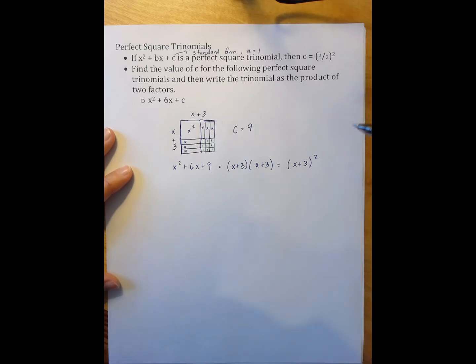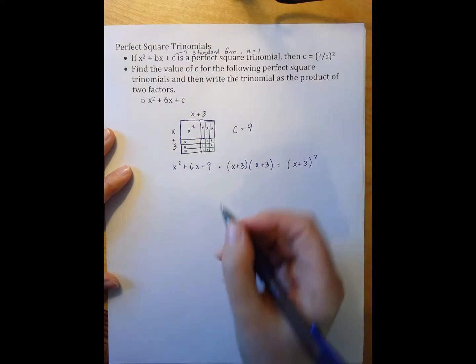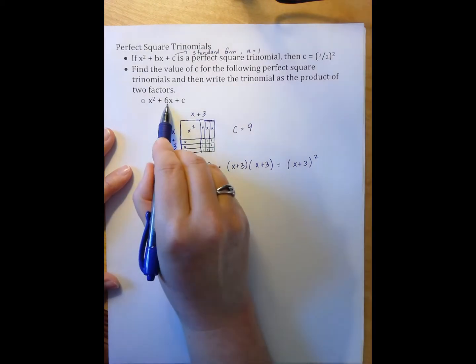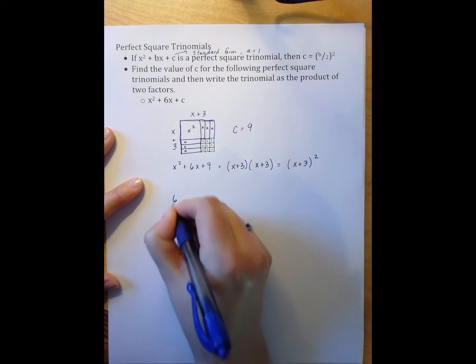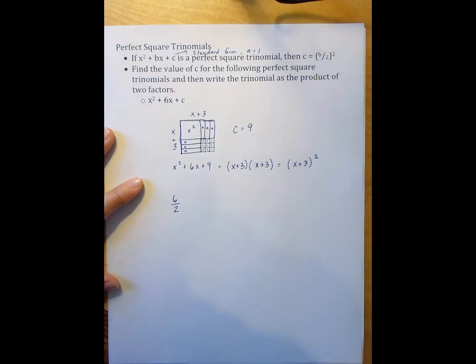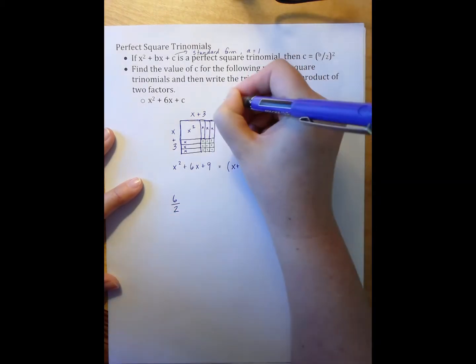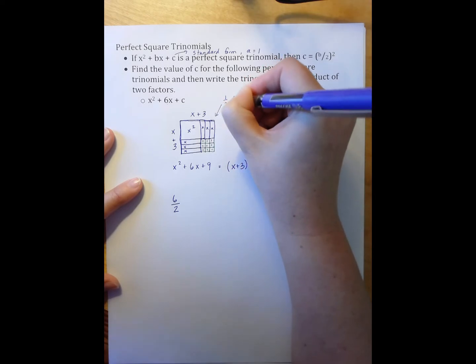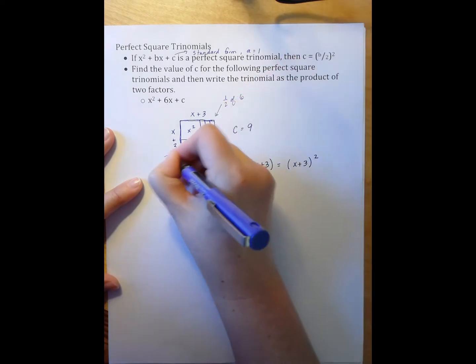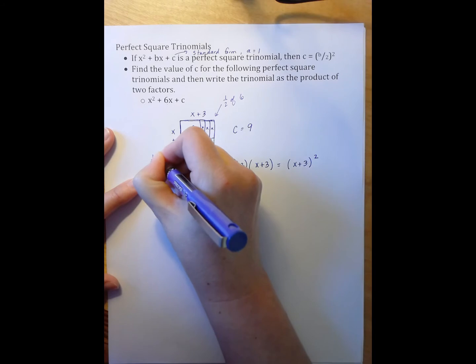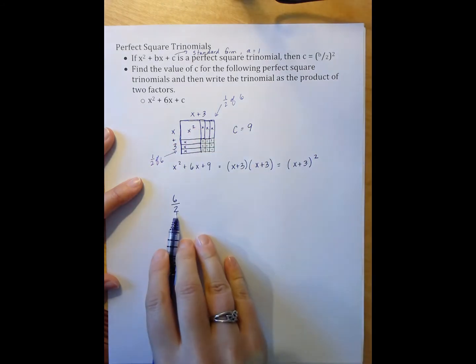Some of you need to continue using this method each time, and that's totally fine. Others of you may be ready to move on to the shortcut, the pattern that we have seen each time. And the pattern says that I take my 6, I split it into two piles. So there's half of the 6, and there's the other half of the 6.